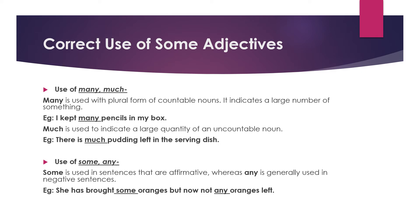Correct use of some adjectives. Use of 'many' and 'much': 'many' is used with the plural form of countable nouns and indicates a large number of something we can count. For example, 'I kept many pencils in my box.' 'Much' is used to indicate a large quantity of an uncountable noun. For example, 'There is much pudding left in the serving dish.'